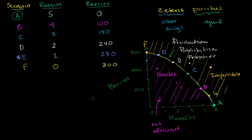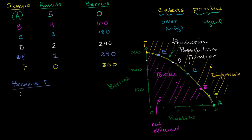But now, all of a sudden, we're in the mood for more protein. We are in Scenario E, and we're in the mood for more protein. So we want to think about what are the trade-offs if we try to catch more rabbits. If I want to catch one more rabbit — going from one rabbit on average to two rabbits a day — so I'm really going from Scenario E to Scenario D.